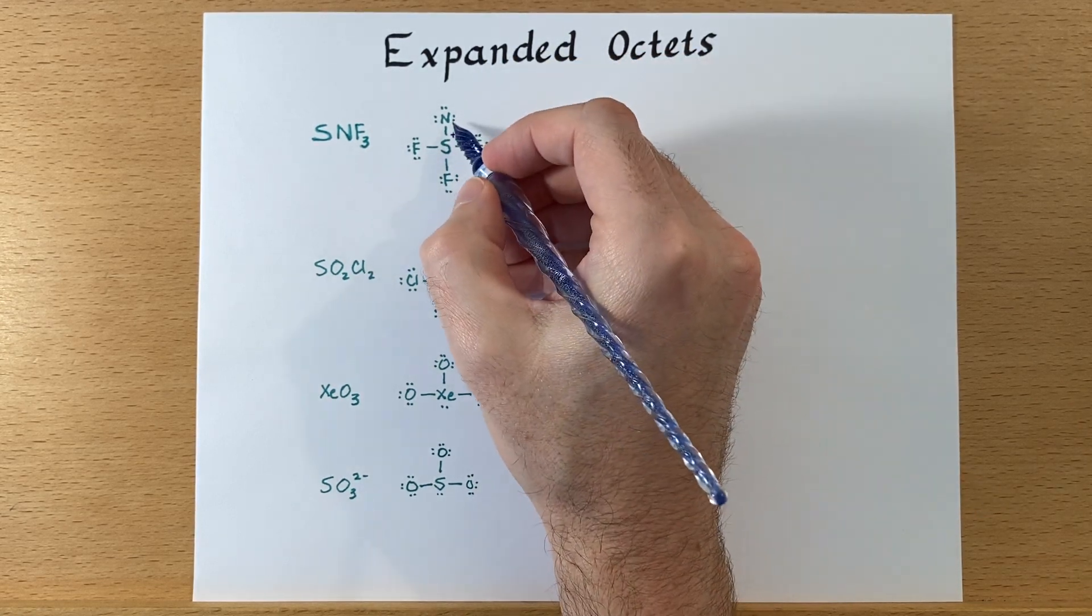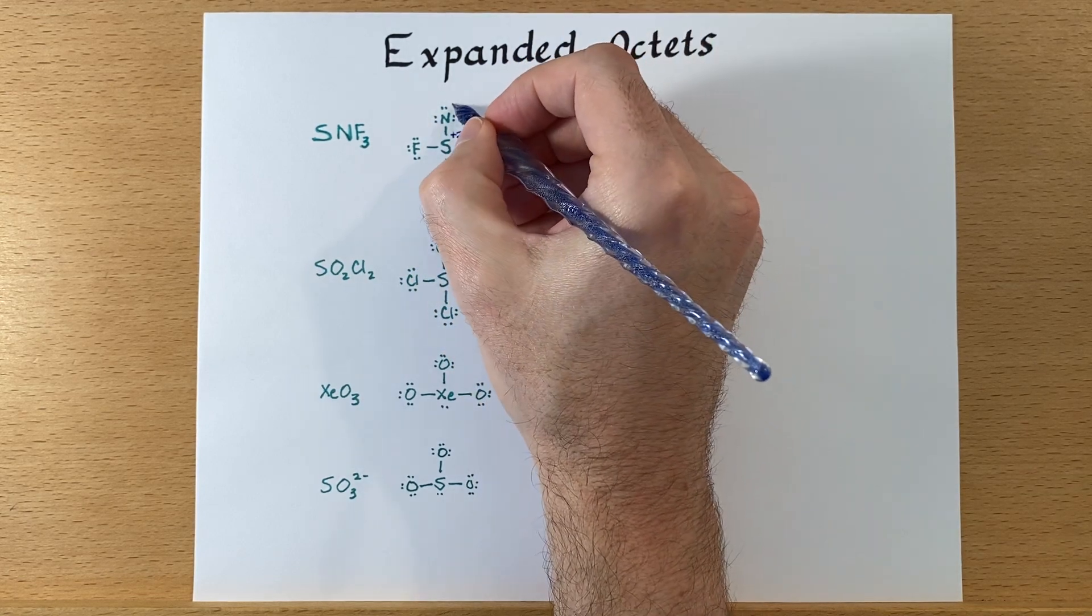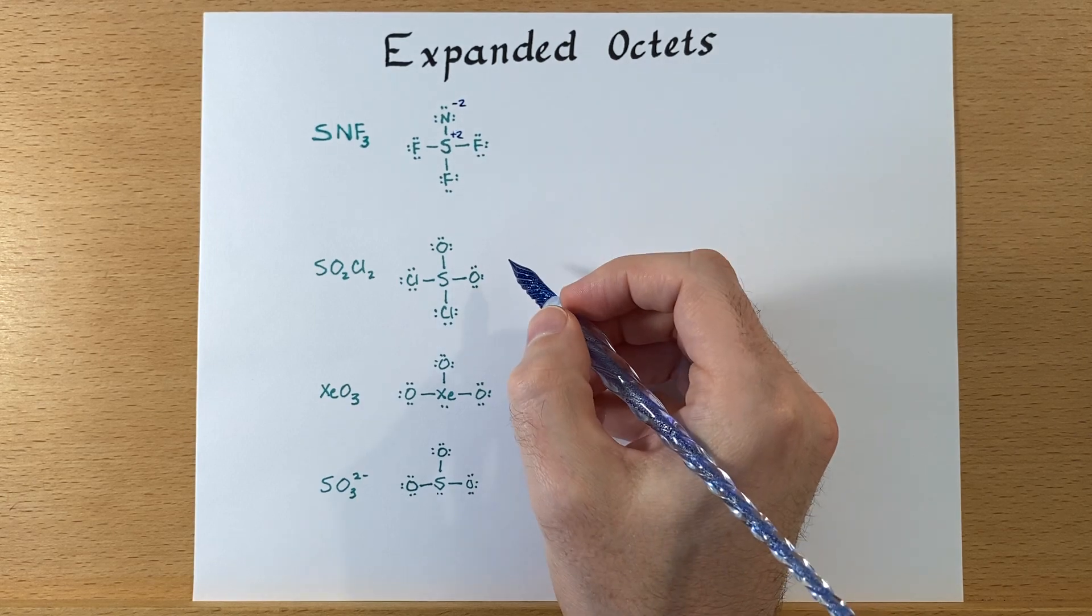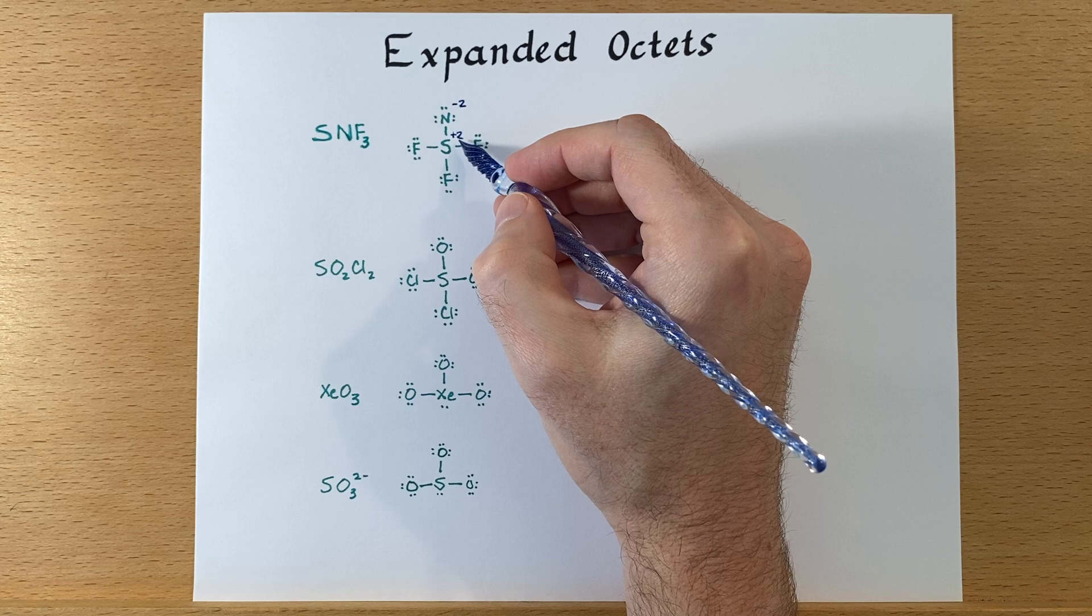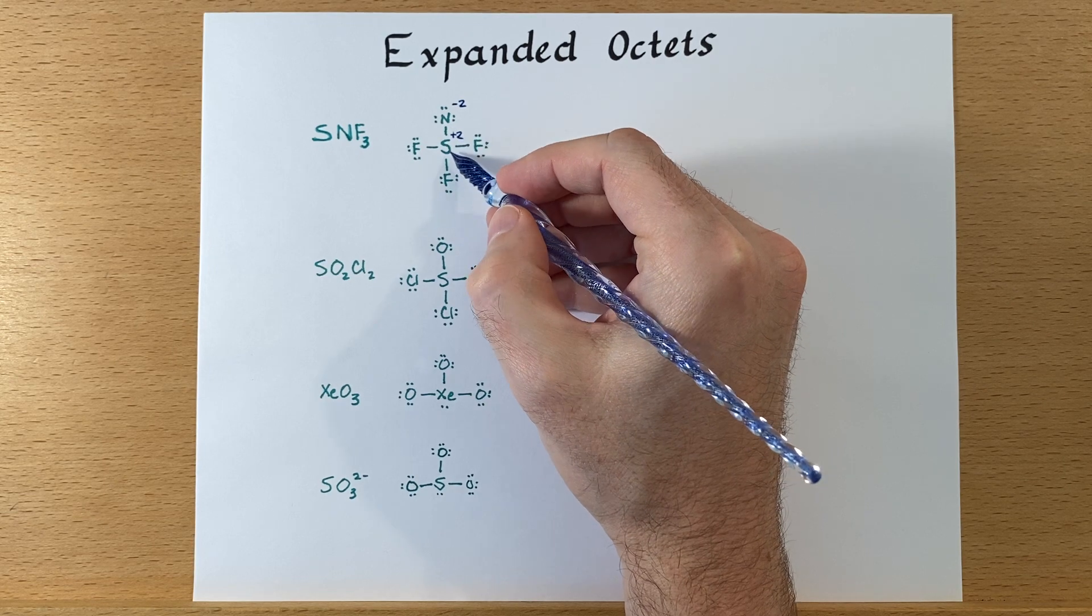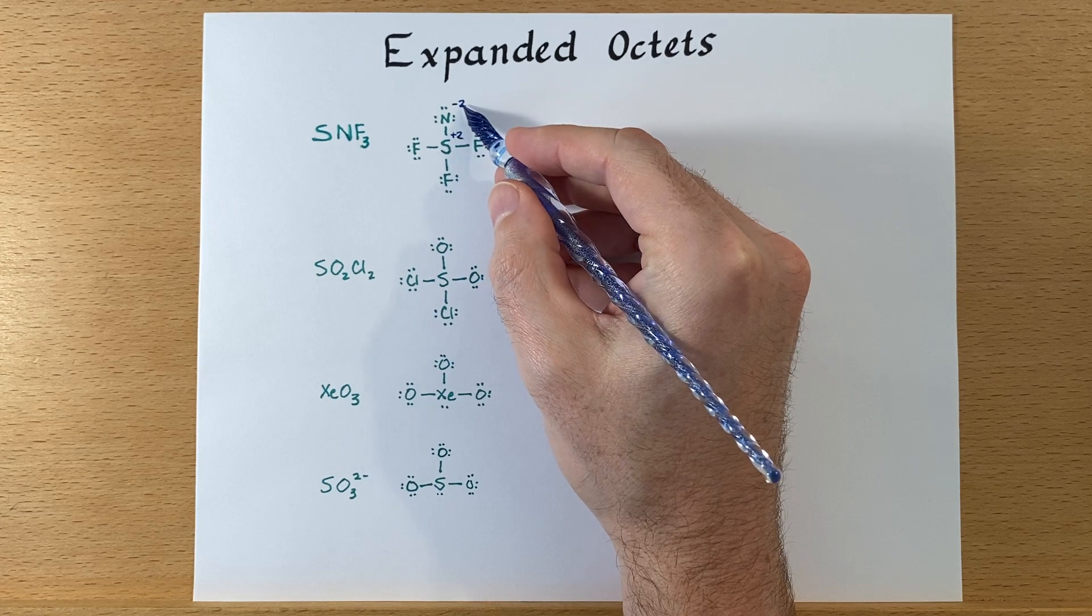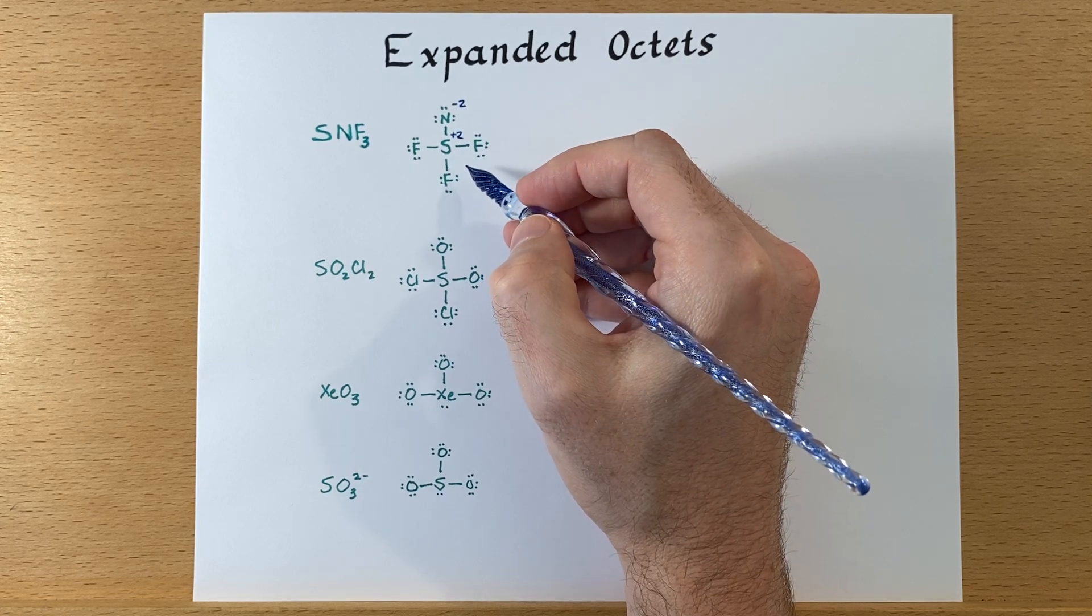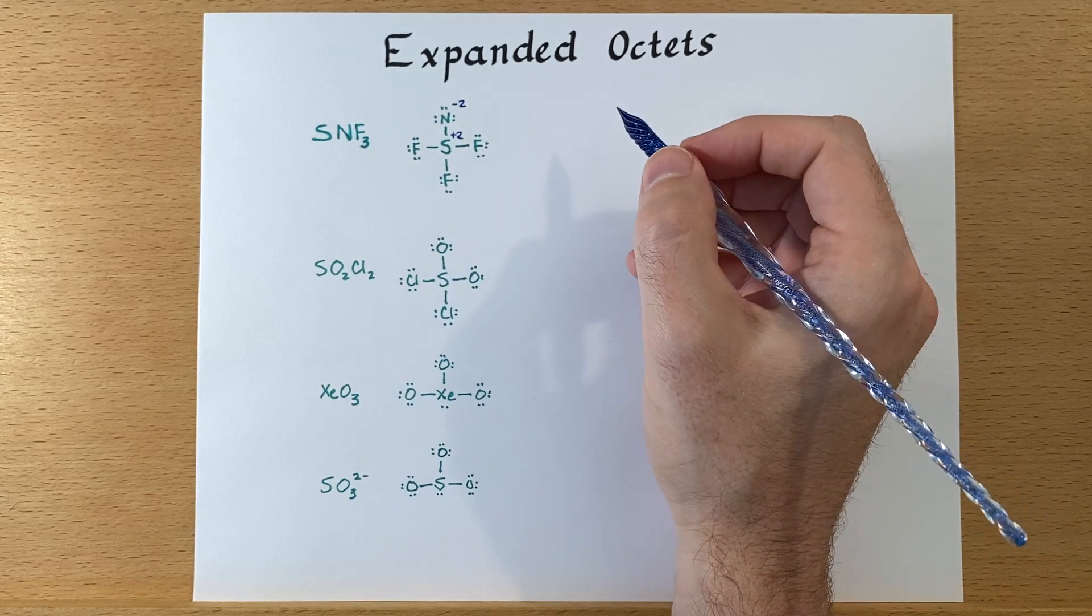And nitrogen, one, two, three, four, five, six, seven. That's minus two. Now, it's less than ideal to have a formal charge separation between two atoms that are next to each other, especially a plus two and a minus two. We could conceivably come up with a structure that would avoid that.